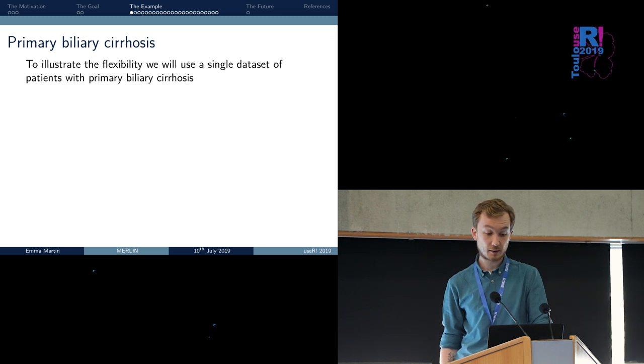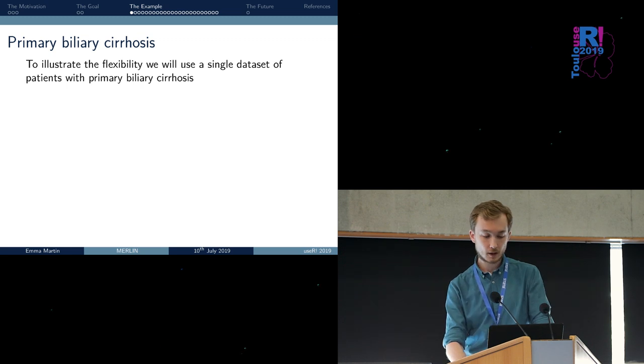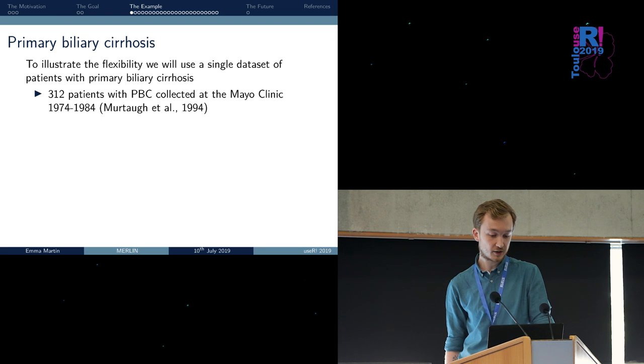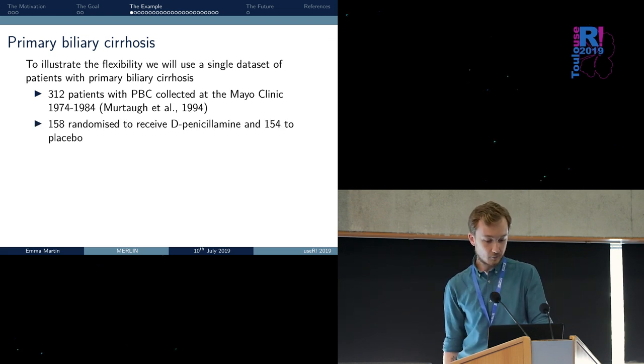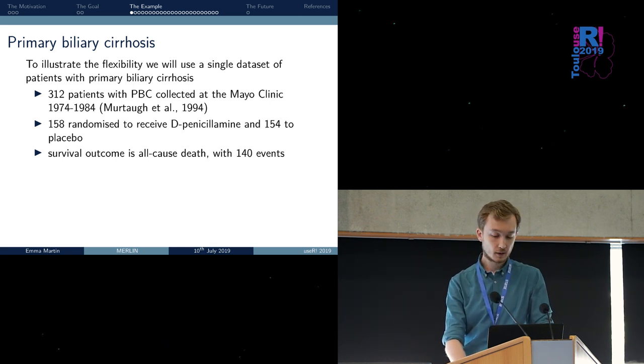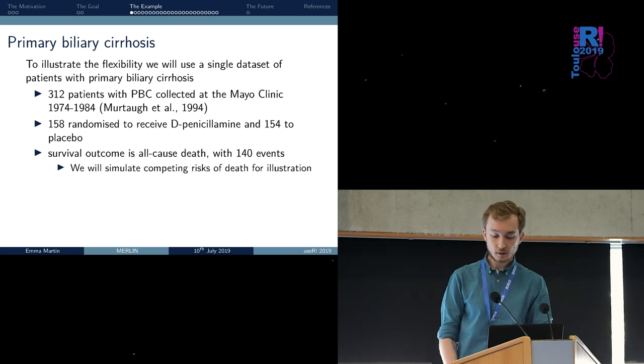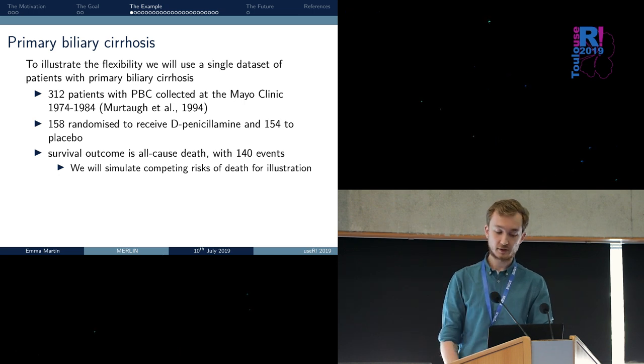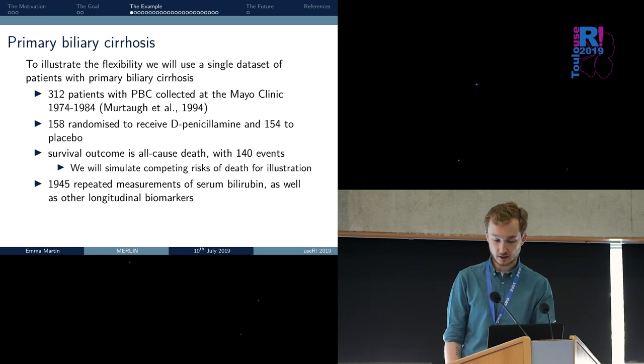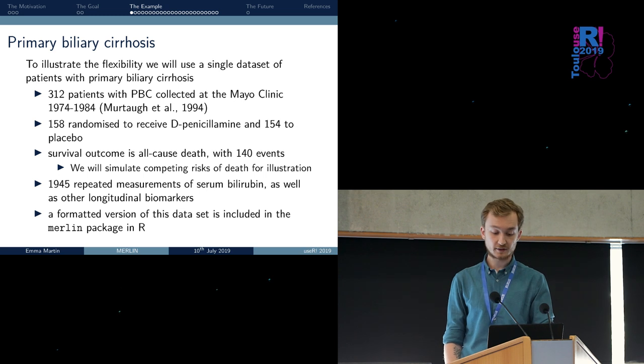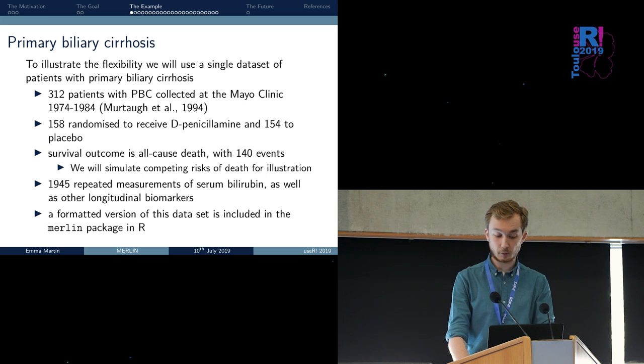We'll use data on primary pulmonary cirrhosis as an example. It's a dataset often used in the settings of joint modeling. It consists of 312 patients with this specific disease. 158 of them were randomized to receive deep penicillamine, and 154 were randomized to placebo. The survival outcome is all-cause mortality, and there are 140 events. For illustration, we simulate competing risks of death. We have almost 2,000 repeated measurements of serum bilirubin and other longitudinal biomarkers.